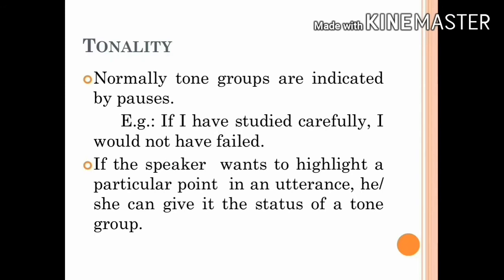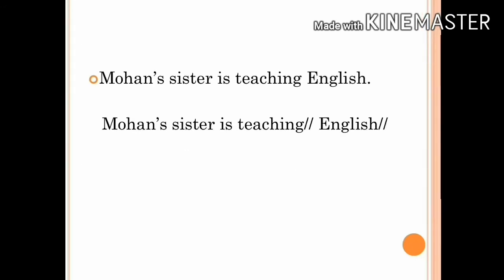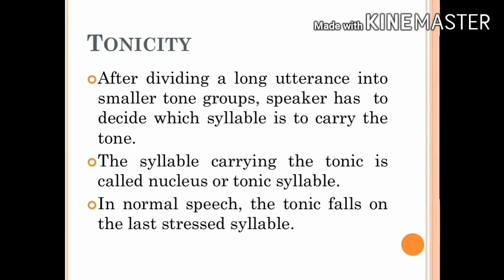Though this is generally so, there are exceptions. If the speaker wants to highlight a particular point in an utterance, he or she can give it the status of a tone group. For example, consider the sentence: Mohan's sister is teaching English. Normally, we utter the sentence as a single tone group. But if we want to highlight the fact that Mohan's sister is teaching English and not any other subjects, we would utter it as two tone groups.